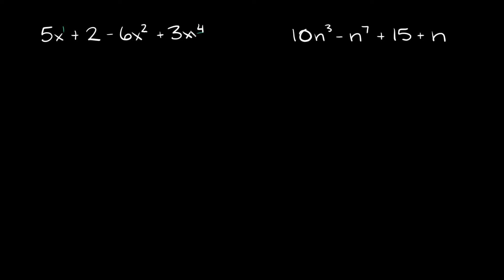Okay, so the biggest one is obviously this one right here, the 4. So then 3x to the fourth goes first. Next one is negative 6x squared. So negative or minus 6x squared. Then we go 5x to the first and that's a positive, so plus 5x. And then the numbers always go at the end, so plus 2. Okay, so now this is written in standard form.